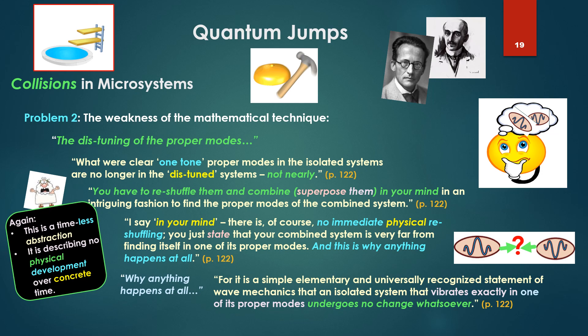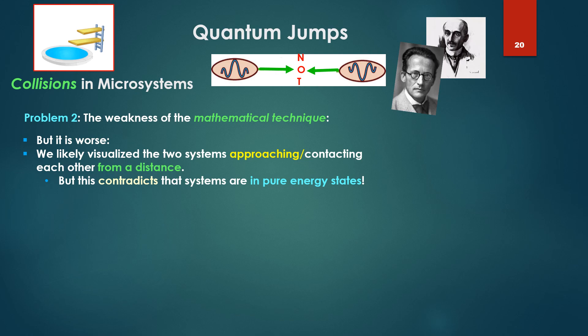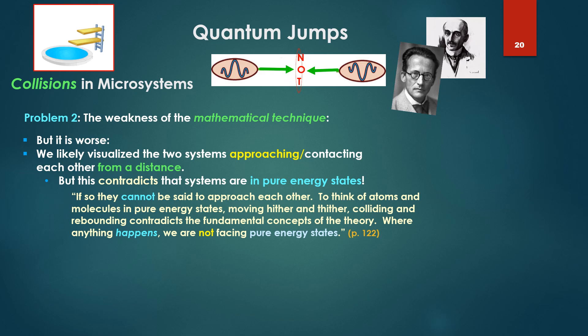So look at the little bombs that Schrödinger is throwing in here. It is worse. We likely visualize the two systems approaching and contacting each other from a distance. But this contradicts that systems are in pure energy states. If so, they cannot be said to approach each other. To think of atoms and molecules in pure energy states, moving hither and thither, colliding and rebounding contradicts the fundamental concepts of the theory. Wherever anything happens, we are not facing pure energy states. Why? He explains this a bit later on, in fact, in the second part of the article.